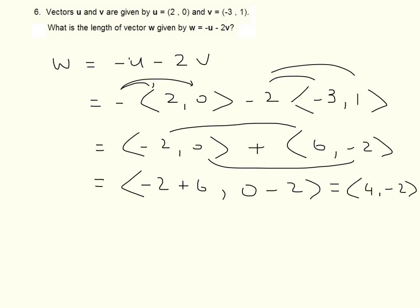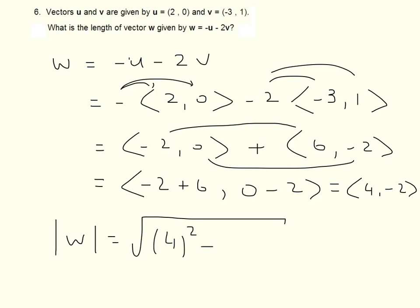Now the magnitude of W is equal to the square root of the components squared, which gives square root of 20, that gives 2 square root of 5.